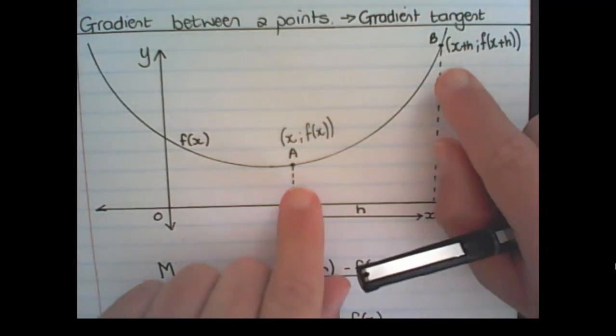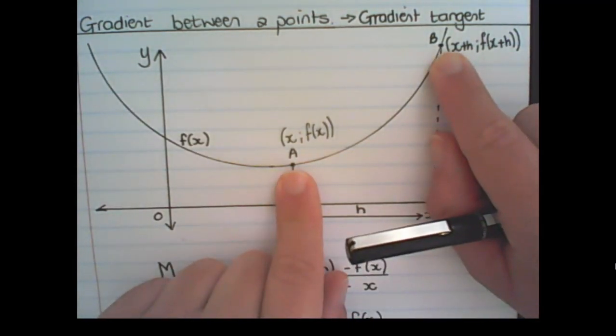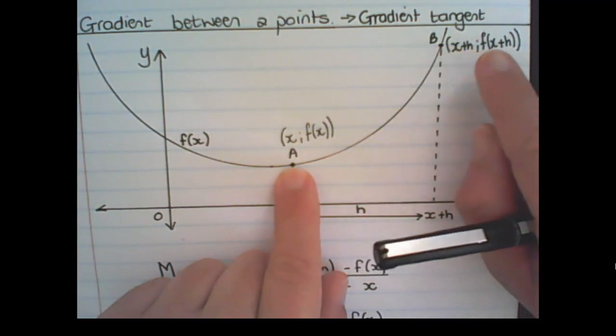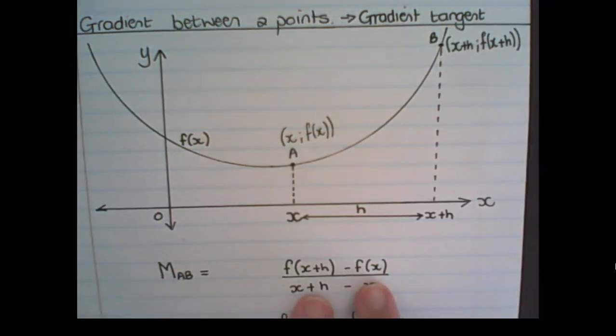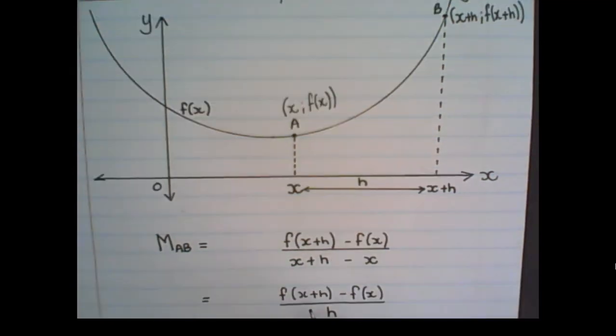Now, if I want to find the gradient between these two points, I use the normal gradient formula. So it is the difference of y's over the difference of x's. So in my gradient formula, I have y's subtracted from each other over the values of x subtracted from each other. And I can simplify. So it's f(x+h) minus f(x). So that is the y value of b minus the y value of a over the x value of b minus the x value of a. And you can see that the x's in the denominator can simplify to h.